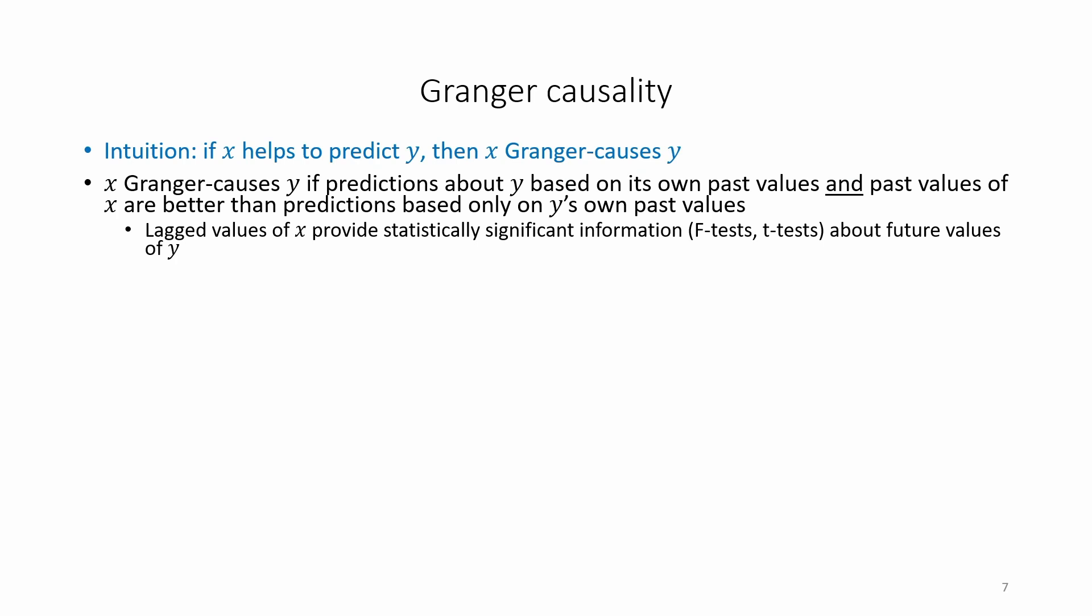which can be measured in terms of f-tests or t-tests, about future values of y. There are two underlying principles. First, the cause happens prior to its effect. And second, the cause has unique information on future values of its effect.